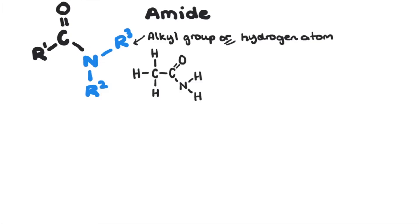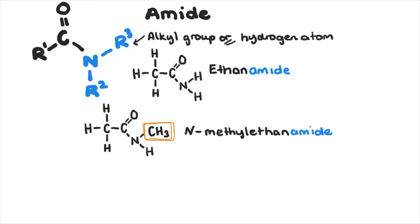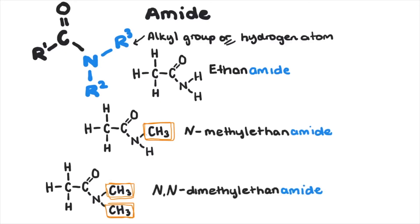Have a geez at this one. The longest chain that contains the amide functional group is ethane. So drop the E and replace it with amide. So this becomes ethanamide. If there's a methyl group attached to the nitrogen, the location is noted as N, as in N for the nitrogen. So this becomes N-methylethanamide. If there's two methyl groups attached to the N, then it becomes N,N-dimethylethanamide.